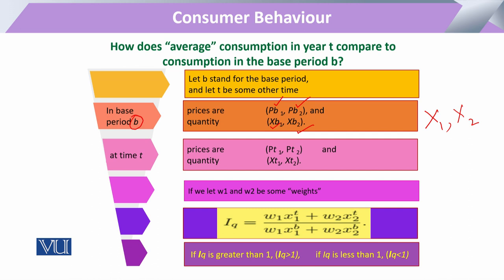Now these same commodities, if purchased in any other time frame ahead of the base period — that time period T — we will call them xt1 and xt2. And pertaining to those commodities, the price of x1 in time T will be pt1, and the price of commodity x2 in time T will be pt2.